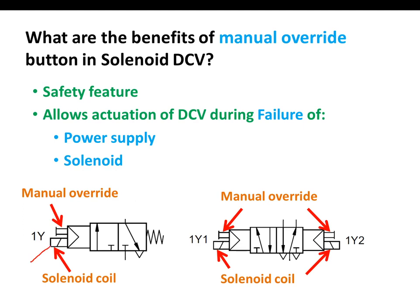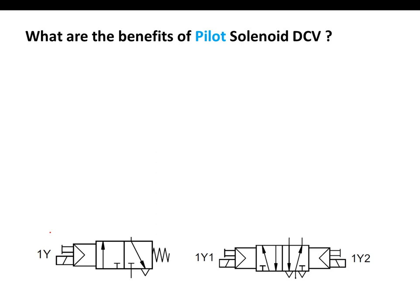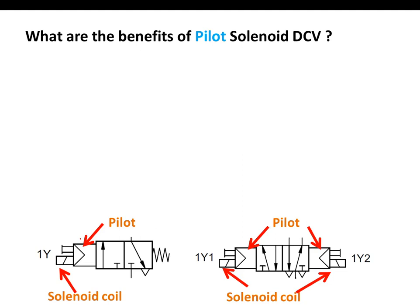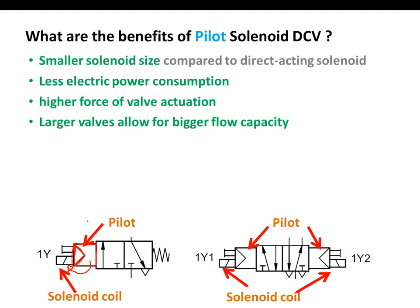What are the benefits of a pilot solenoid DCV? A pilot is an assistance accessory which uses pneumatic pressure — shown by a triangular shape — to assist our solenoid. By the aid of this pilot, we can reduce the size of our solenoid, have less power consumption since the solenoid is smaller, and increase the force of actuation.